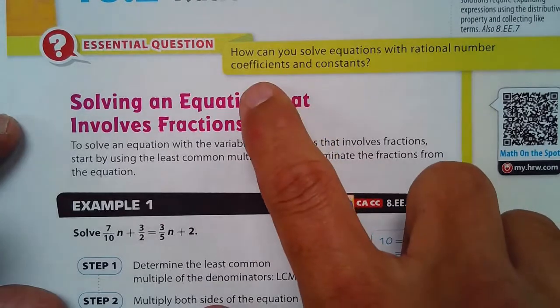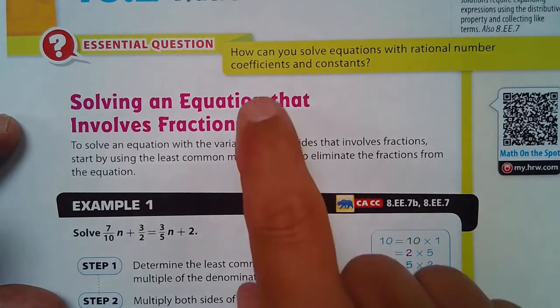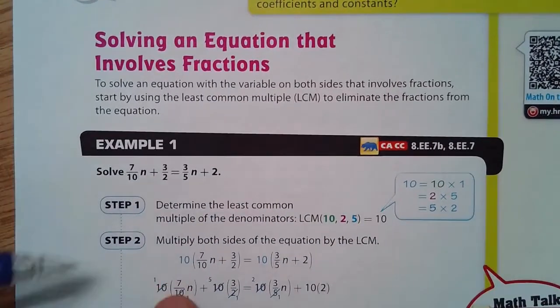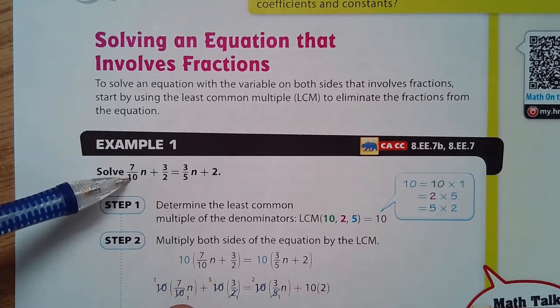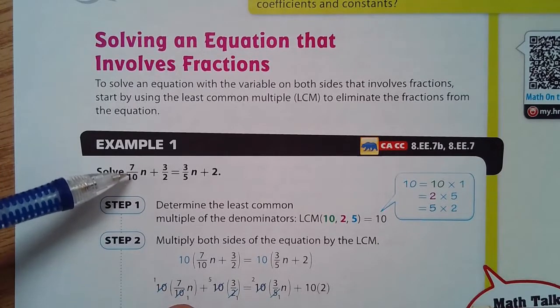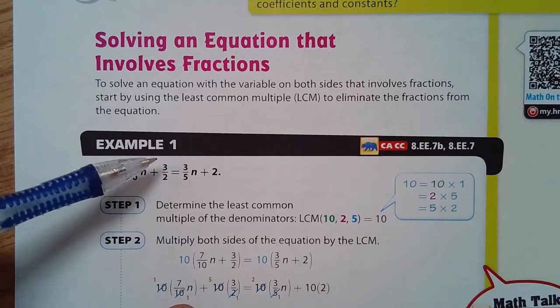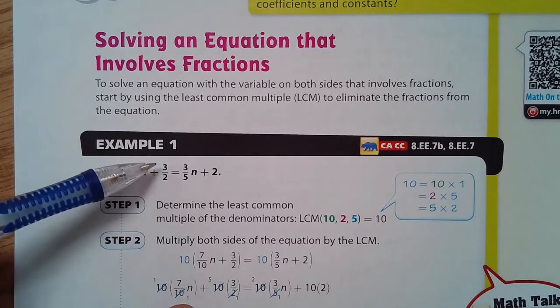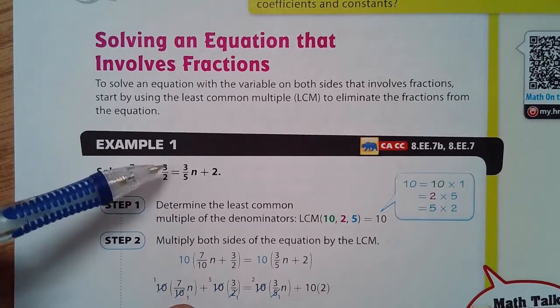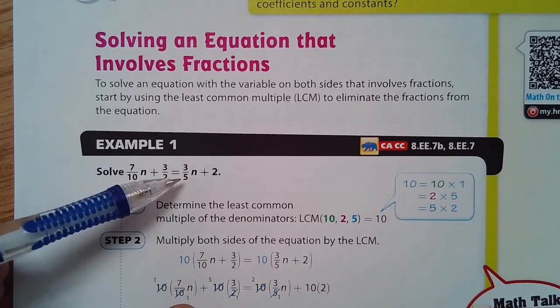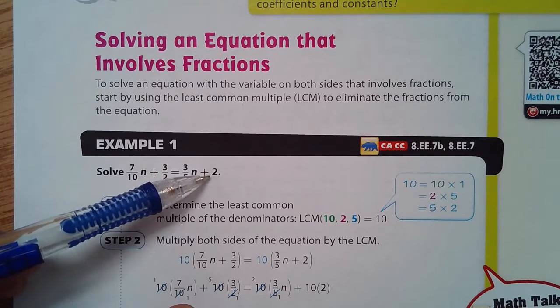Now to remind you about coefficients and constants. The coefficient is always the number in front of the variable. In this case, seven tenths is the coefficient and a constant is a number without a variable. Three halves is a constant. Three fifths is a coefficient and two is a constant.